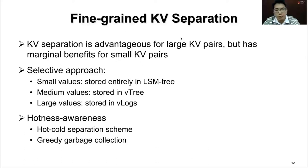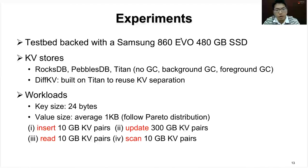For more details, please refer to the paper. In our experiments, we compare against RocksDB, PebblesDB, and Titan with several different GC configurations. We build a real-world workload based on Facebook's model, which basically follows a character distribution. We mainly evaluate four basic operations: insert, update, read, and scan.